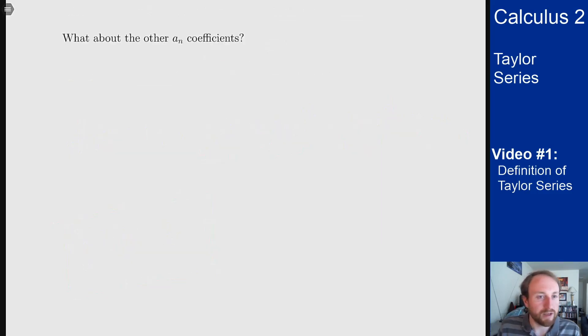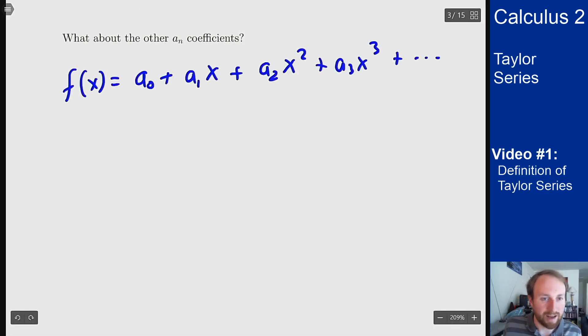What about if I wanted to go beyond a_0? Well if I look again at the first couple terms, how can I get at a_1? Well a_1 has an x in front of it but if I take a derivative that x goes down to an x to the zero which is a constant term and then we can see what happens there.